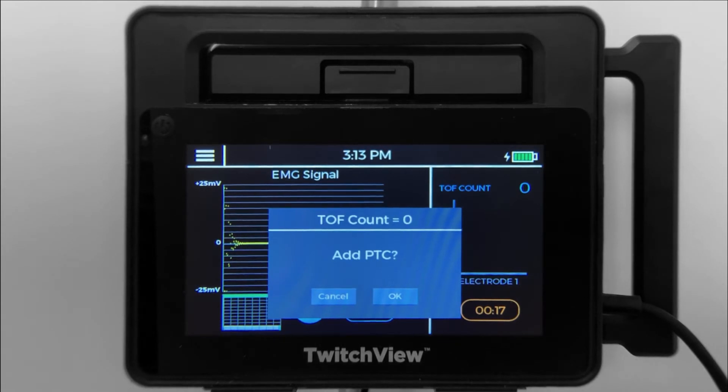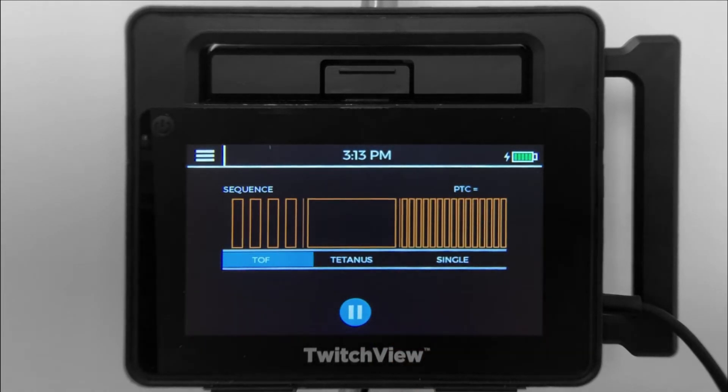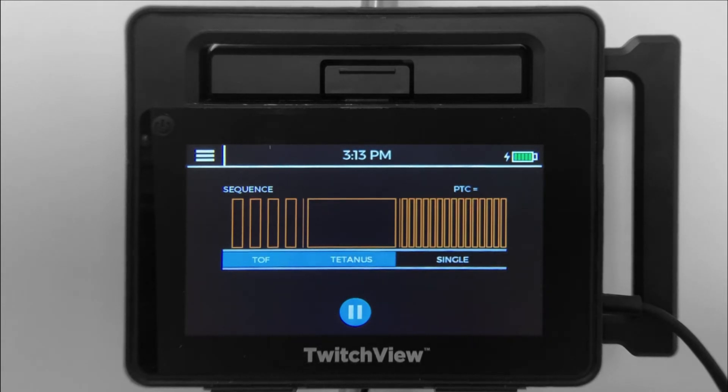Prior to every post-tatanic measurement, the monitor runs a TRAIN-4. If there is no response, the monitor will proceed with post-tatanic stimulation followed by single twitches. The post-tatanic count can range from 0 to 15.